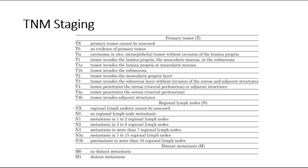For N, it refers to the lymph nodes that are involved — N0, N1, N2, and N3. M refers to whether there is any distant metastasis.